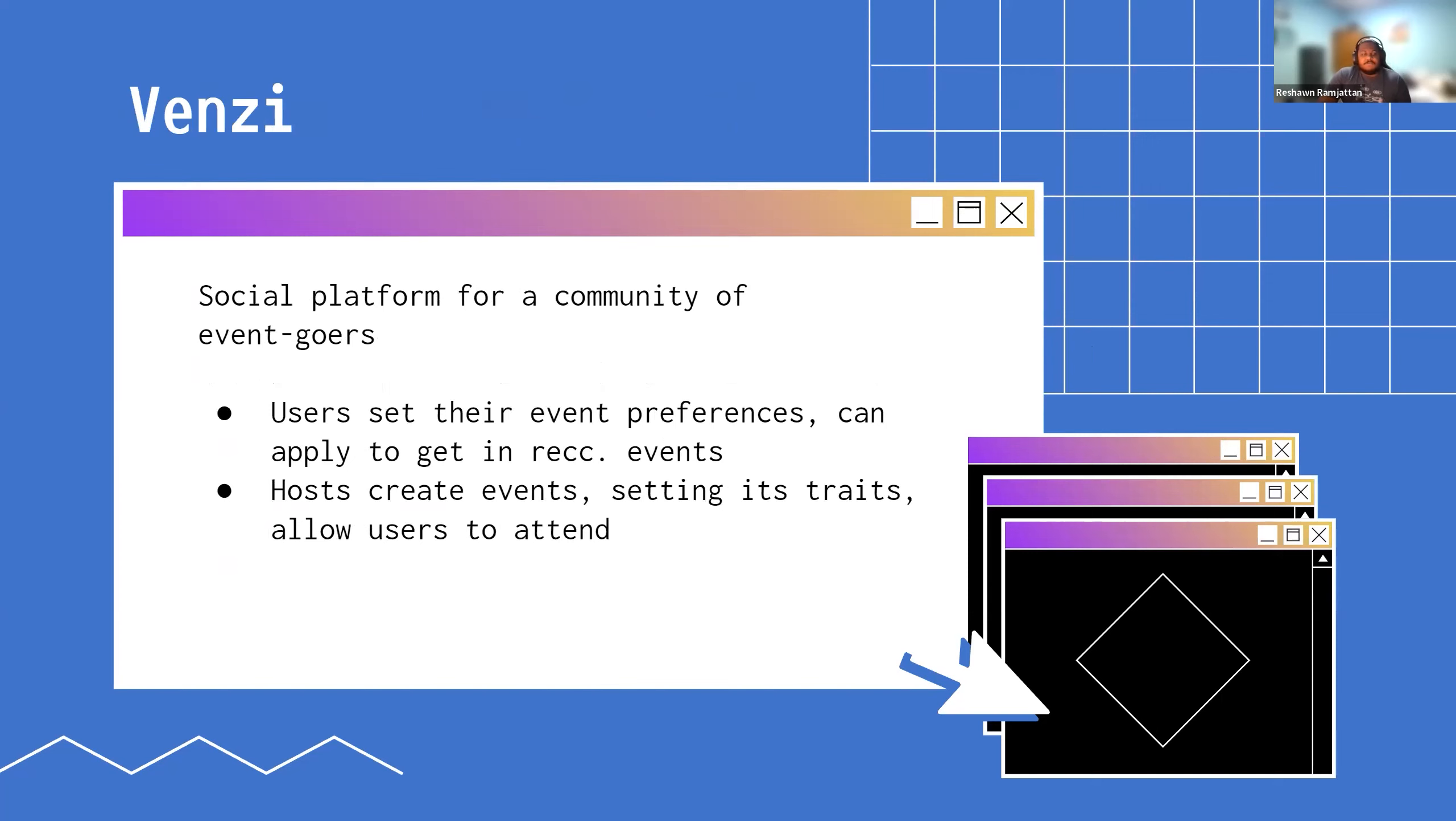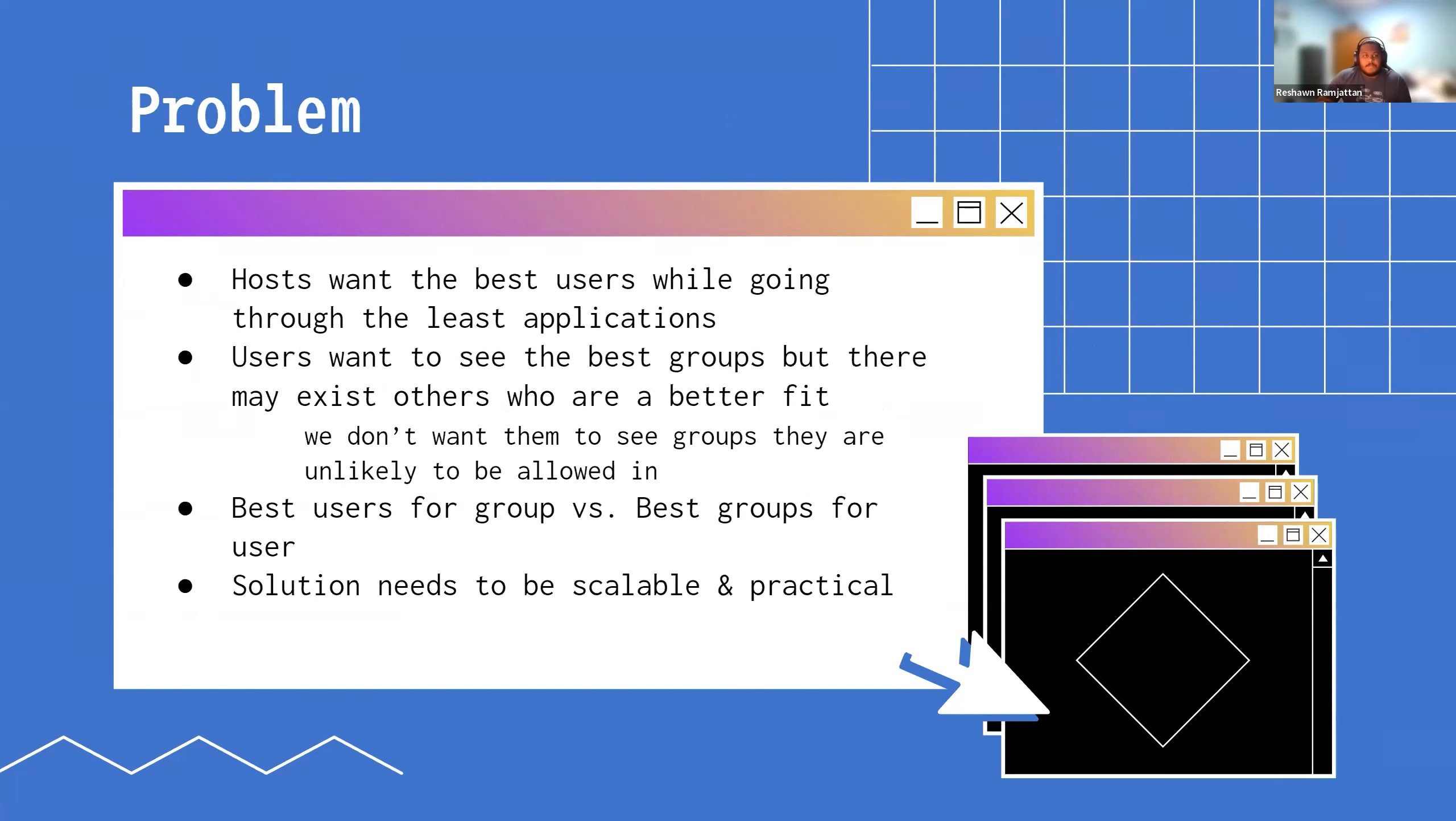This ties back to Nicolas's company Fenzy. As I said before, it's a marketplace kind of social platform for events. The setup at the time was very similar to what I just described. Users can set their event preferences, ask to join events, hosts create them, set the traits, allow them, etc.